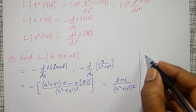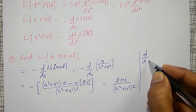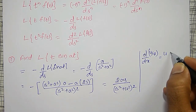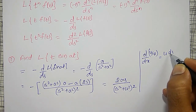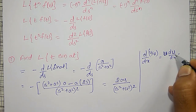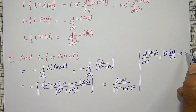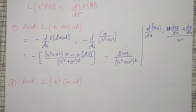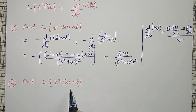For your reference, the u by v rule states: derivative of u by v with respect to x is v times du by dx minus u times dv by dx, divided by v squared. Now the next example: find the Laplace transform of t squared into cos(at).